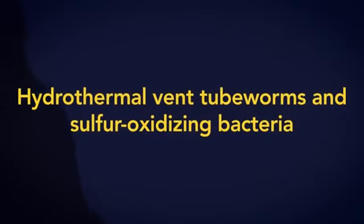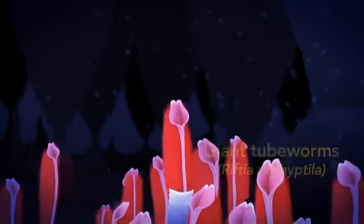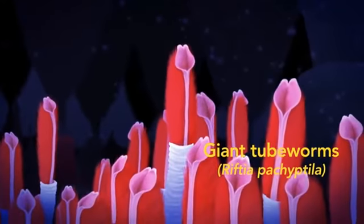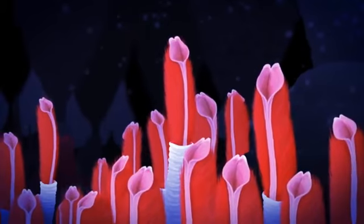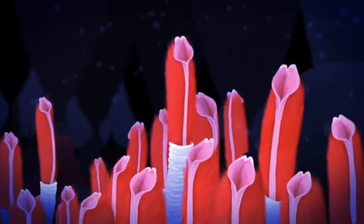Tubeworms cover the deepest, darkest reaches of the ocean floor near black smokers, a type of hydrothermal vent. These worms have no mouth and no digestive tract. Instead, they have a special organ called a trophosome.